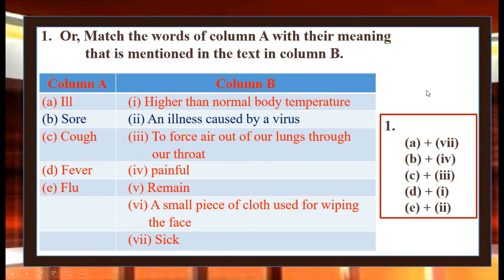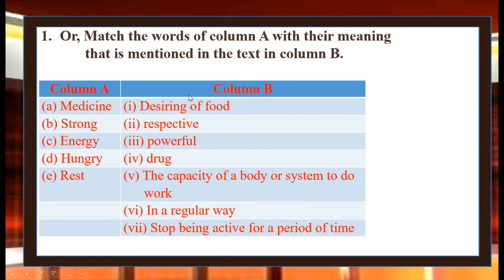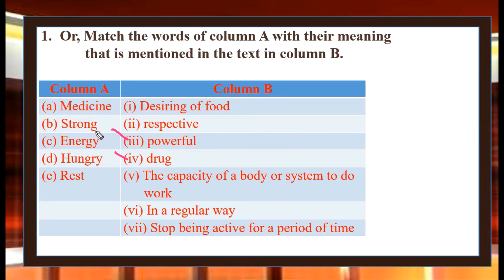Now we have to look at the matching. The matching section includes 'medicine' — we look at Column B: number 4 is 'drug.' Medicine and drug match, so number 4. Next, 'strong' means powerful. 'Energy' means shakti — the capacity of a body or system to do work. So energy matches number 5.